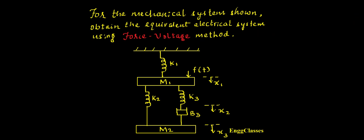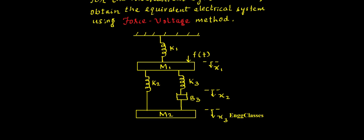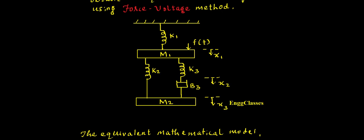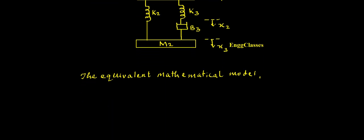This is the given mechanical system. Force F has been applied to a mass m1 which produces a displacement x1, there is a displacement x2, and there is a displacement x3 at another mass m2. The very first task is to draw the equivalent mathematical model. For that I need to identify the number of displacements. As there are three displacements, I have to draw three different nodes.